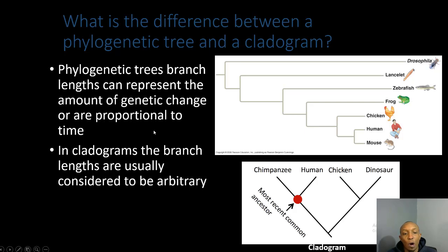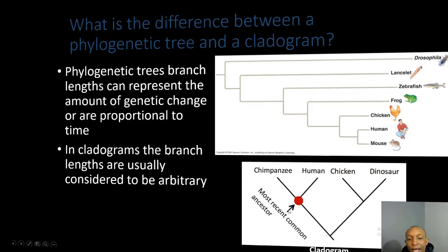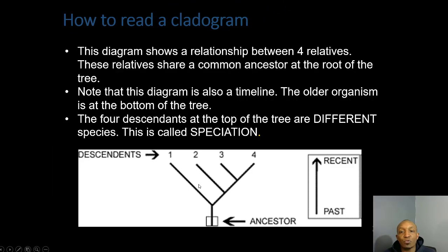Phylogenetic tree branch lengths can represent the amount of genetic change or be proportional to time — this line represents time and shows how soon speciation occurs. In cladograms, branch lengths are usually considered arbitrary, meaning the longer branch does not necessarily mean a longer period of time.